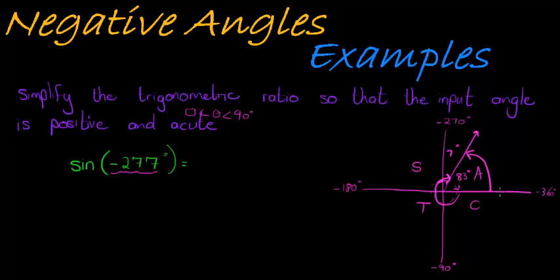So 83 is that angle and I know that sine in the first quadrant is positive. So this would give me exactly the same answer as just saying sine of 83 degrees. Got it? Good.